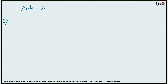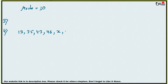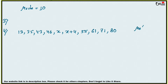Question number 4: the marks of 10 students in an examination arranged in ascending order are: 13, 35, 43, 46, x, x+4, 55, 61, 71, 80. If the median marks is 48, find the value of x.